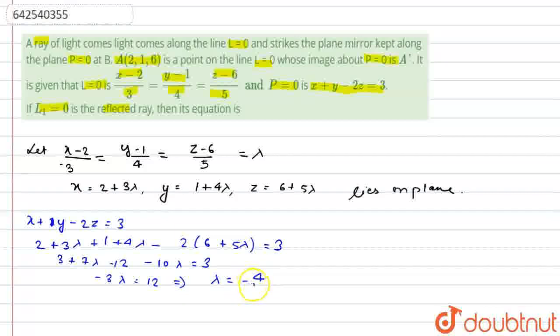Put this value of lambda in the equation of x, y, and z to find the coordinates. x will come as minus 10, y will come as 1 plus 4 lambda, that is 1 minus 16, that is minus 15, and z is 6 plus minus 20, that is minus 14. Coordinate B equals minus 10, minus 15, minus 14, but we have to find the equation.